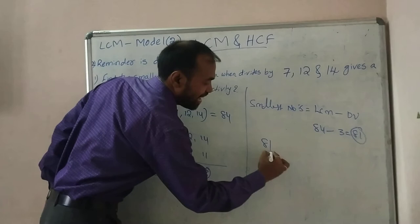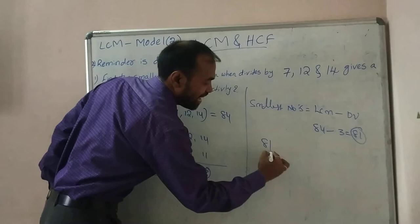You can verify: 81 divided by 7, 81 divided by 12, and 81 divided by 14 gives remainders 4, 9, and 11 respectively.